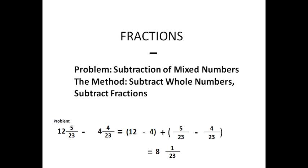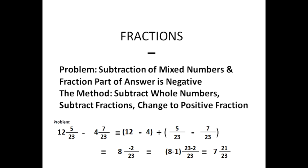Now we subtract two mixed numbers. The whole number parts: twelve minus four is eight. Then we do five over twenty-three minus four over twenty-three, which is one over twenty-three. The final answer is eight and one over twenty-three.